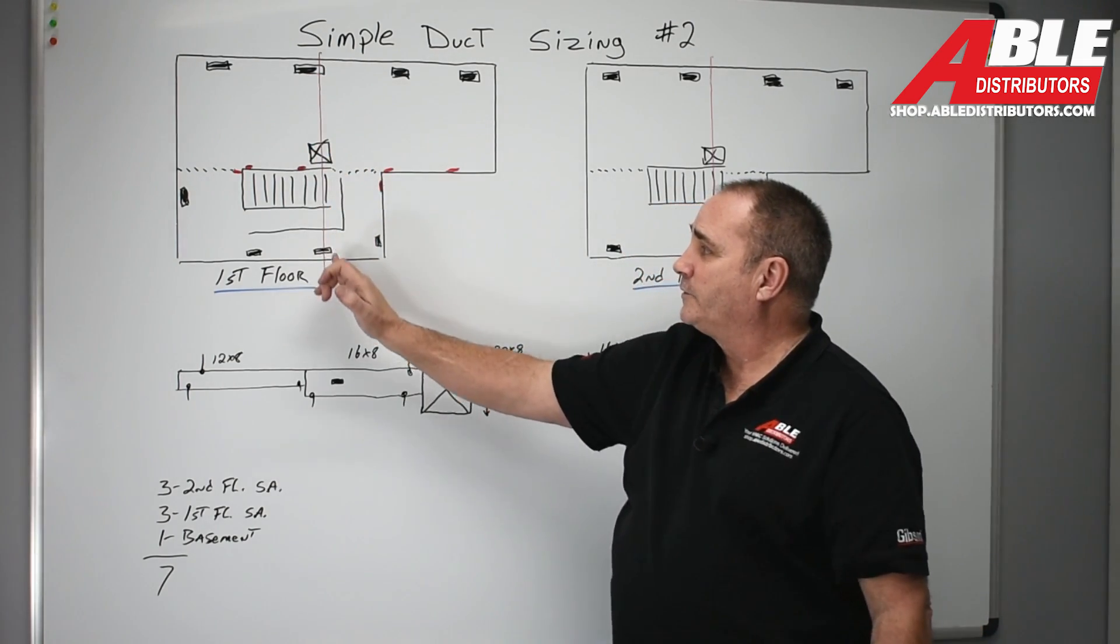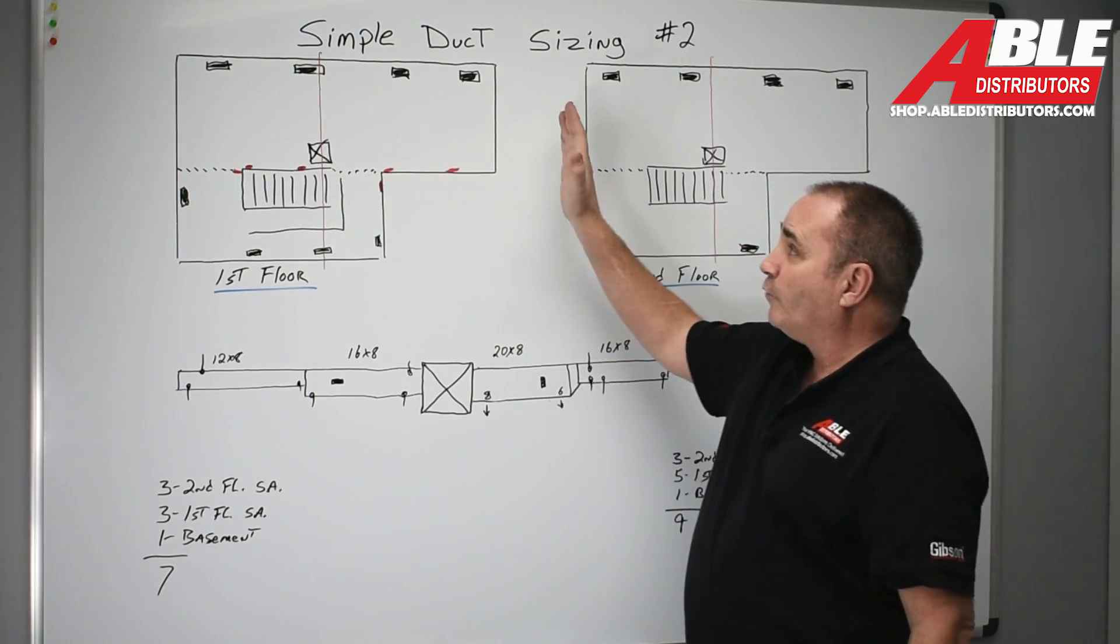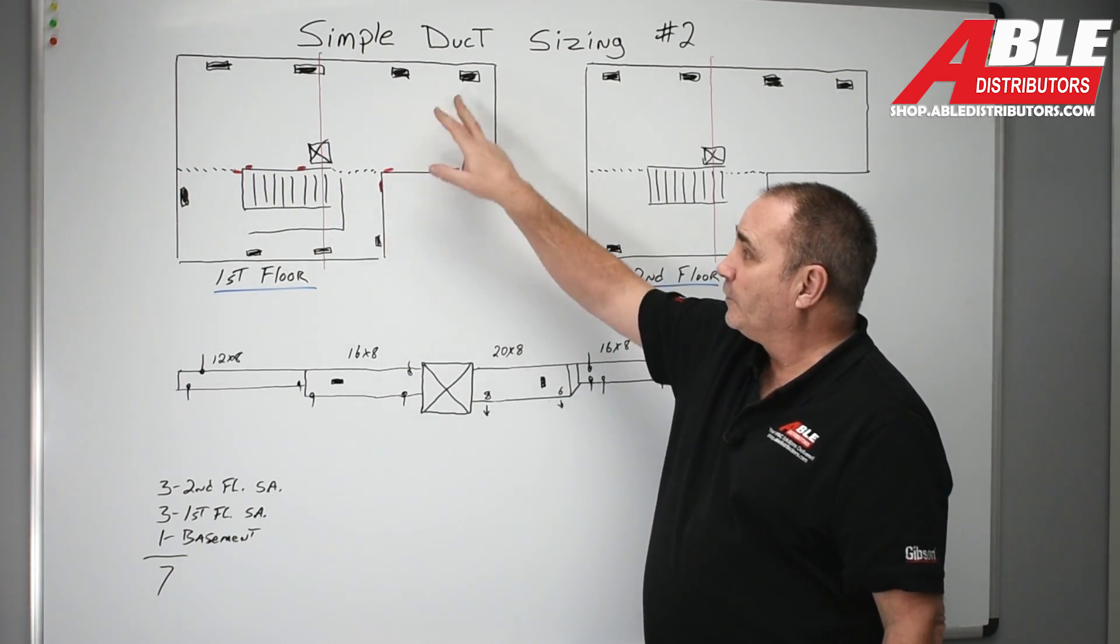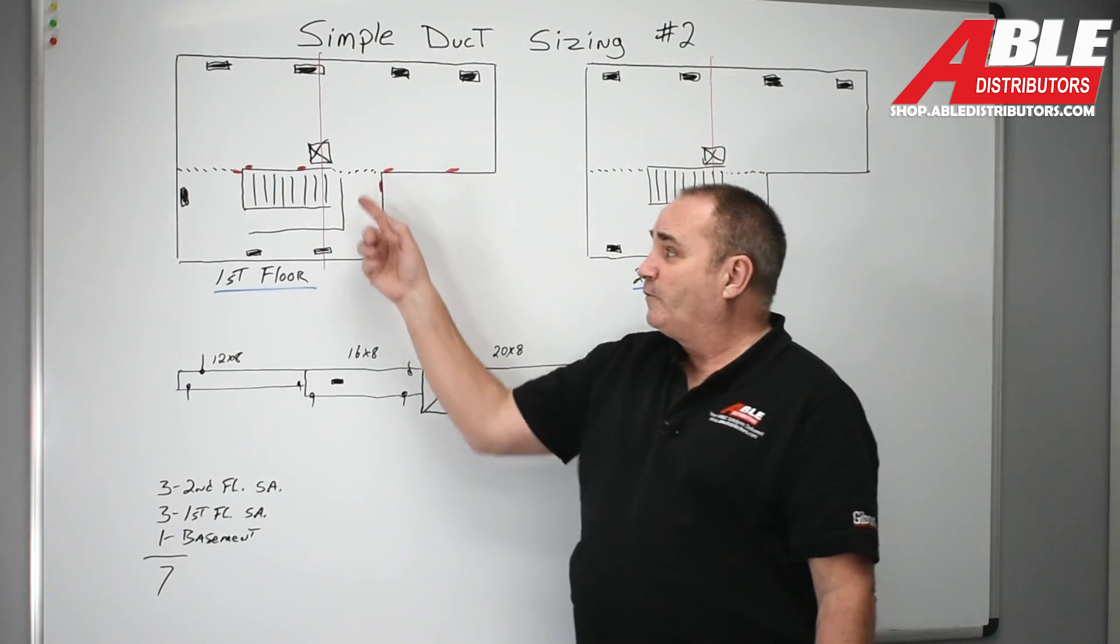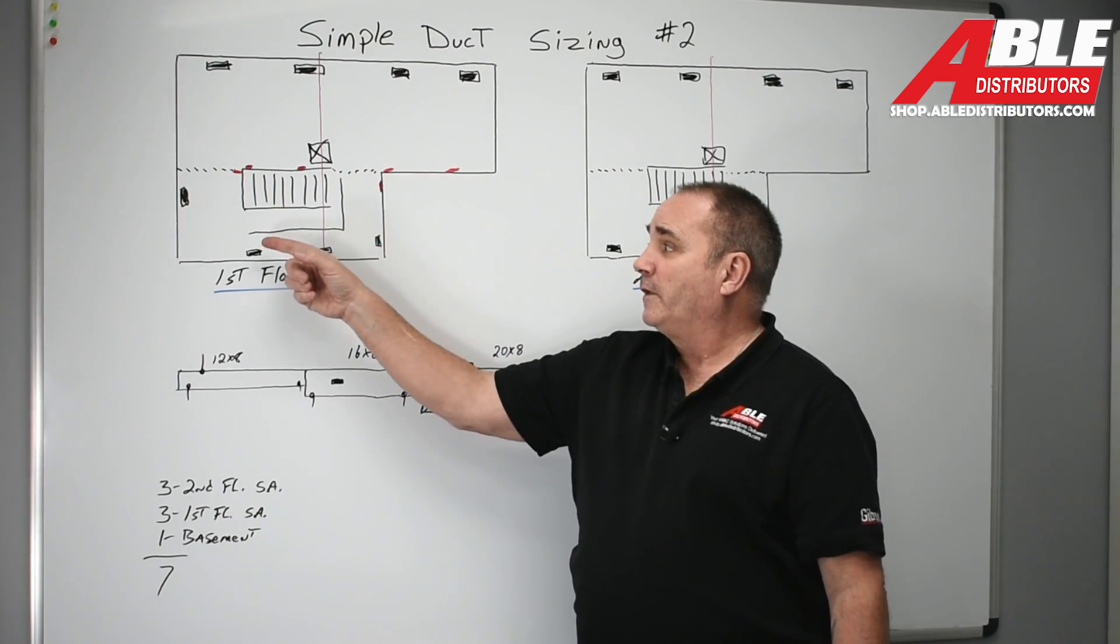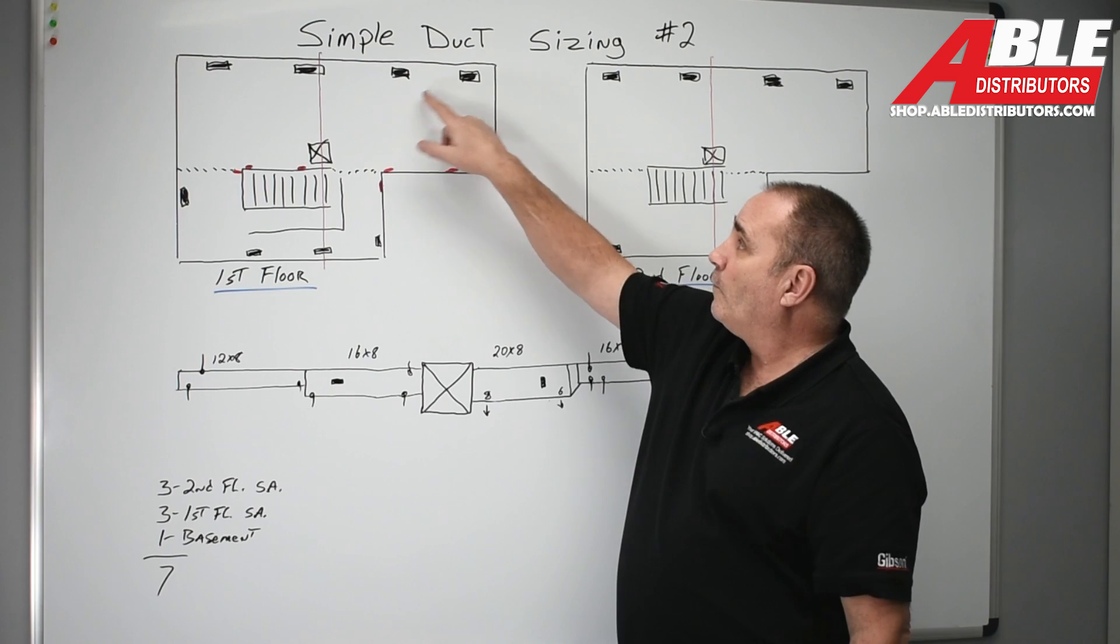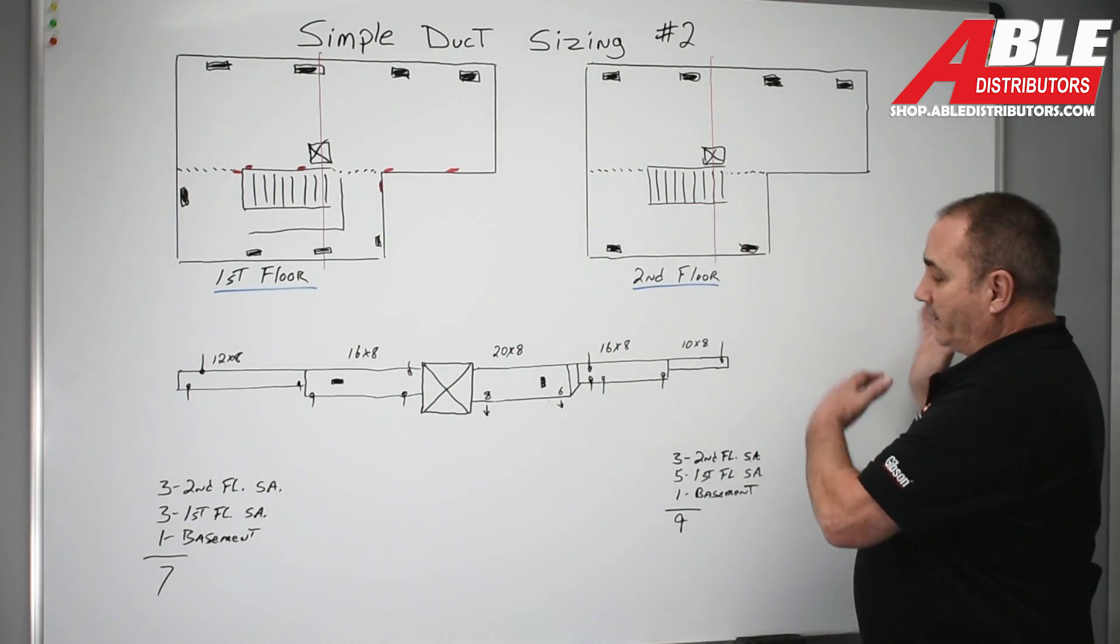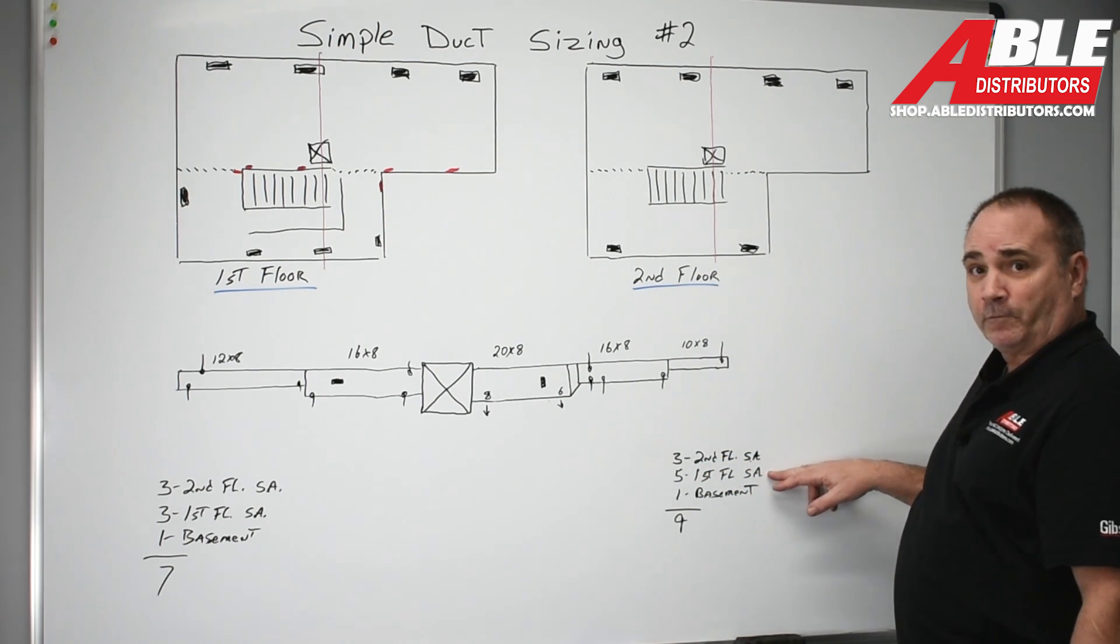So I divided the house in half right above where my furnace is going to be so I know to the right I've got one, two, three first floor supplies and I've got two on the other side of the stairwell and I have to figure out how I'm going to get there. So I just figured I'd take and jump an 8 inch to two 6 inch saddles and hit that. So I've got one, two, three, four, five. So to the right side on the first floor I've got five first floor supplies.